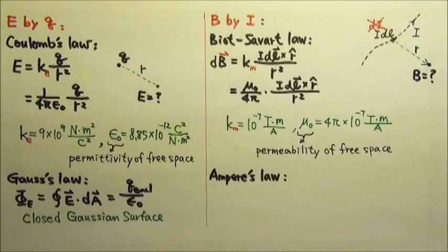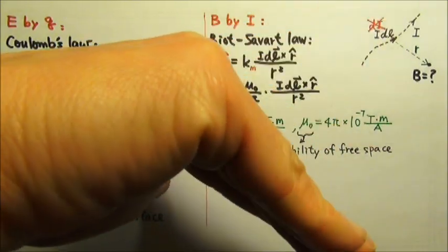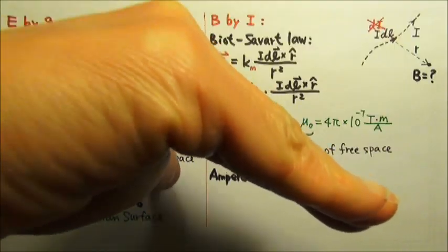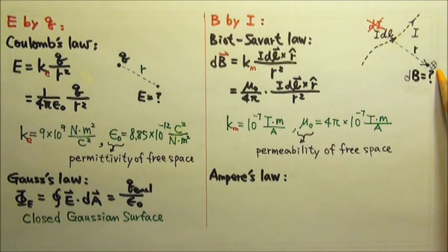So if we use the right-hand rule for this cross product, we would have dL cross r and our sum goes into the paper. So the dB here goes into the paper.